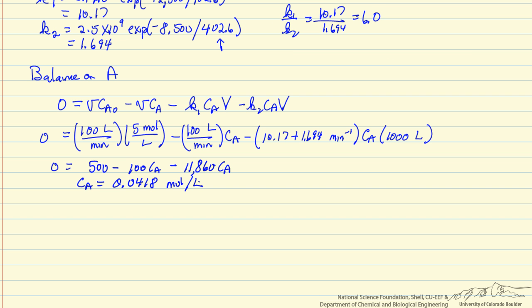So I've substituted the numbers along with units to make sure that the units are consistent. And everything is in moles per minute. So I can solve for the concentration of A. So we can see we have a high conversion of A in this reactor.